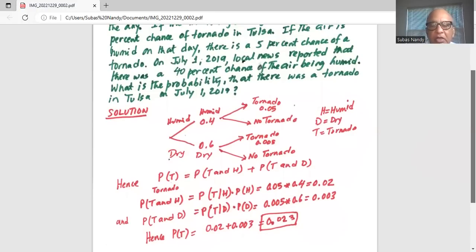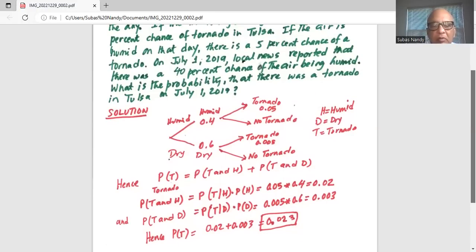Hence, the probability of tornado is the sum of those two joint probabilities: 0.02 plus 0.003 or 0.023.